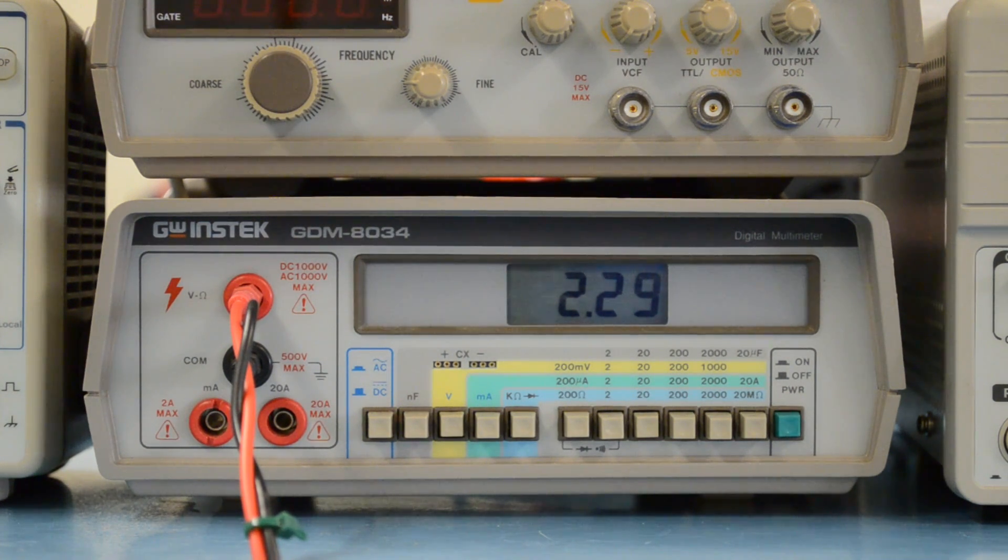There, 2.2 volts. We know this number sounds about right, because 10 kilo ohms is about 70% of the total resistance, 13 kilo ohms.